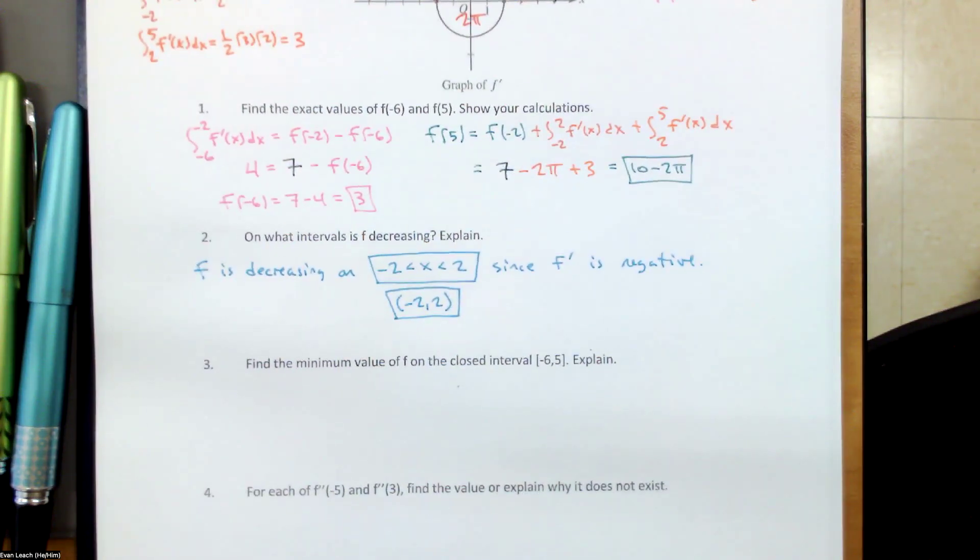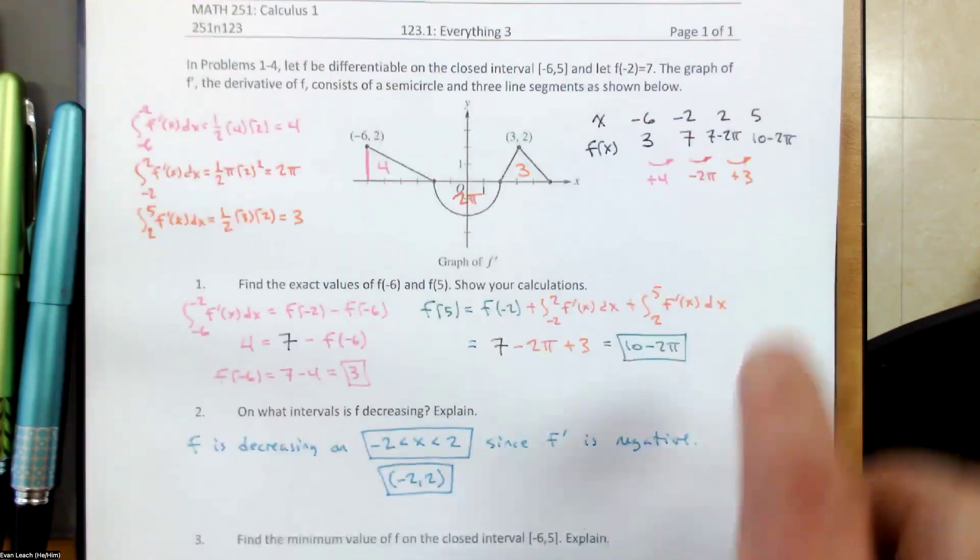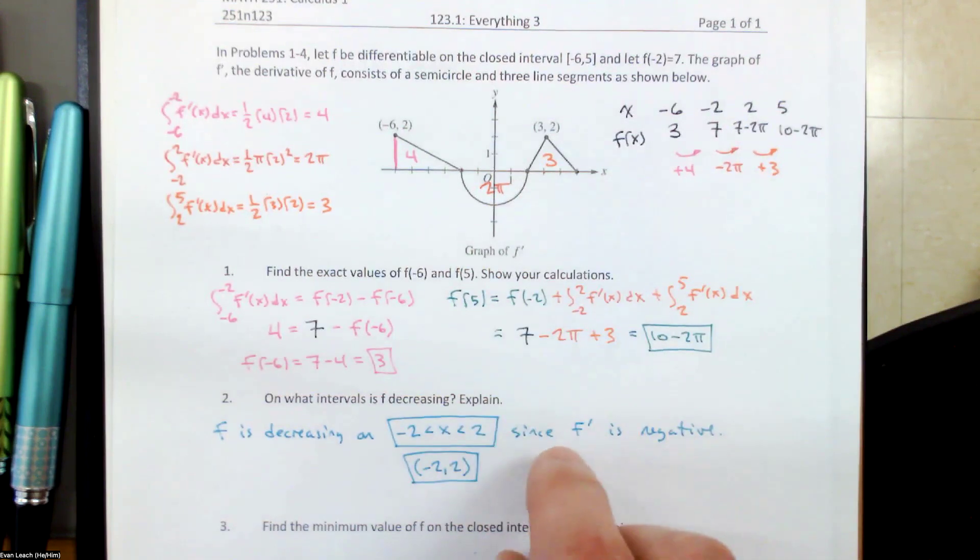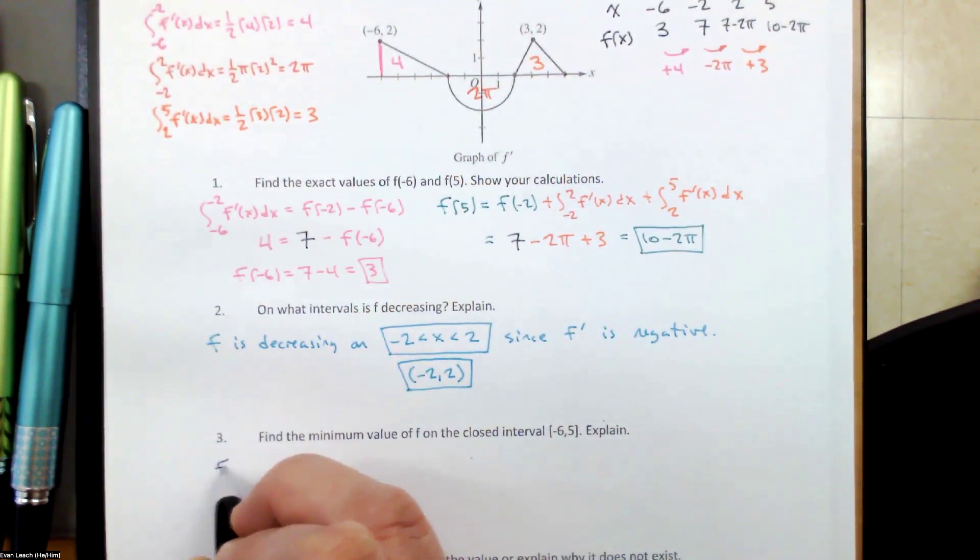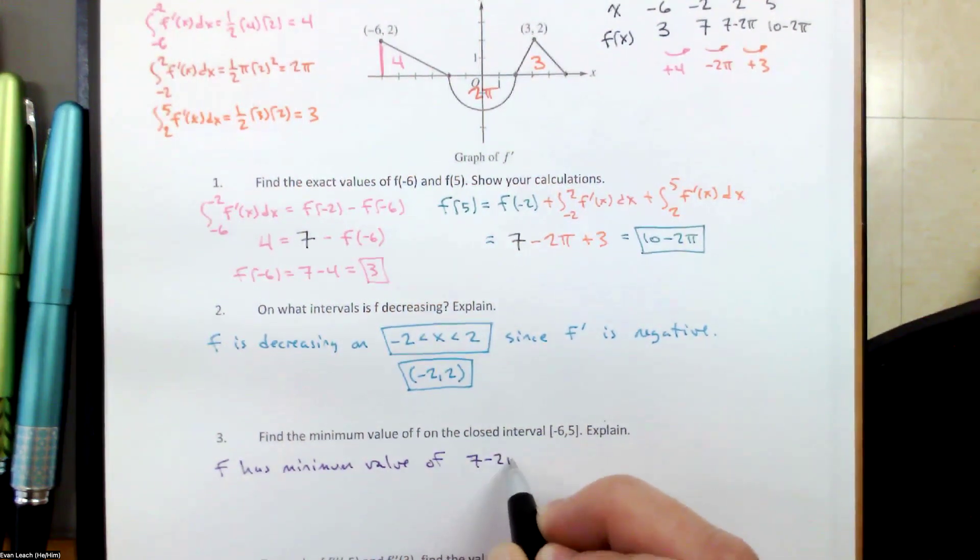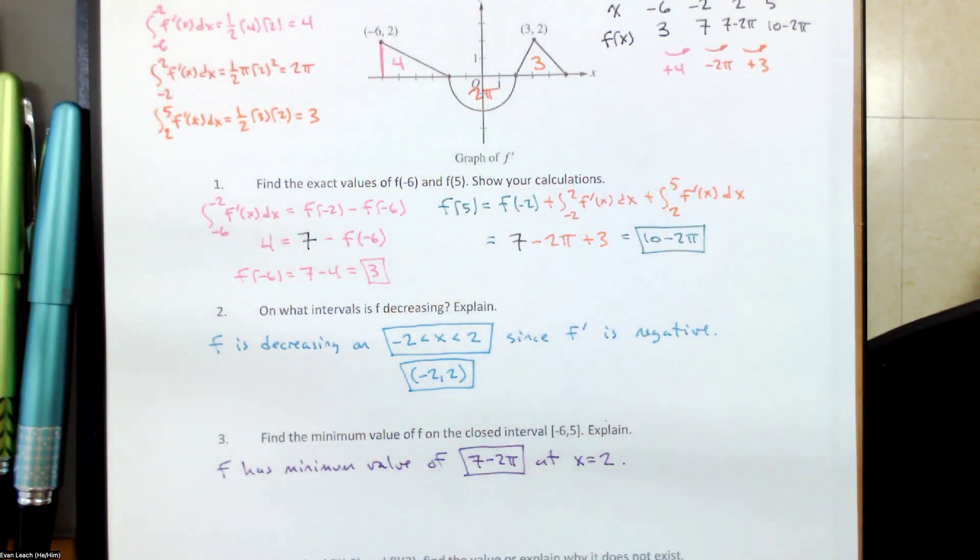In part 3, find the minimum value of f, so this is a little bit different than the question that I was asking you yesterday. Yesterday I said find the x coordinate of a local minimum or local maximum, whichever one it was. Here I'm asking for the minimum value of the function, so not where it occurs but what it is. So this is where we need this other piece of the table. The minimum value of f happens at 2 because the function changes from decreasing to increasing. So we'd say that f has a minimum value of 7 minus 2π.